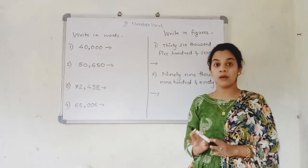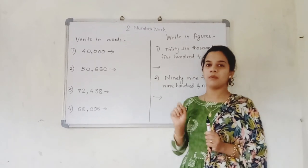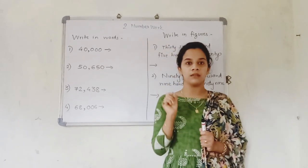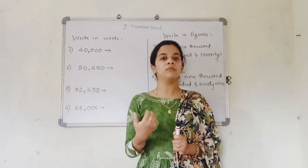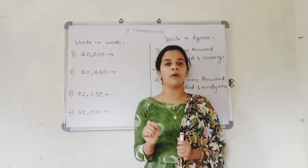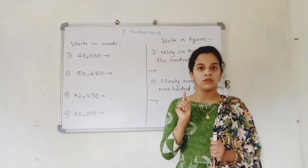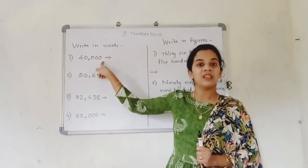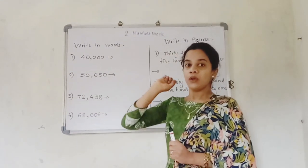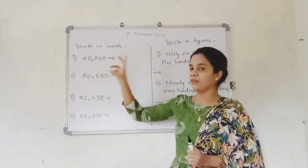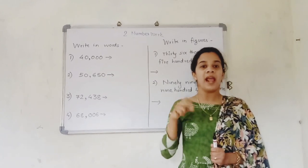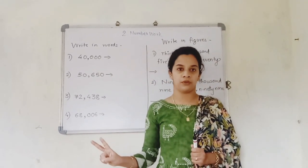Write in words. You might feel confused because I have added a comma. So just note this: always keep the habit of writing the comma — it helps you understand numbers more clearly. When should a comma be placed? Just remember: go from the right-hand side to the left-hand side. Count 3 places and draw a comma. Then after every 2 digits, insert another comma.